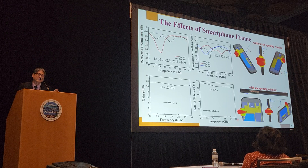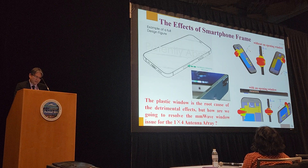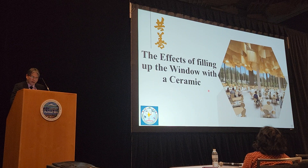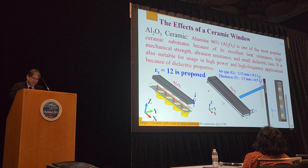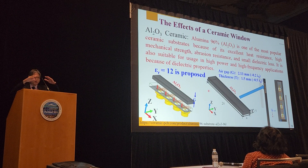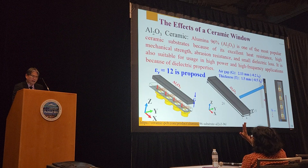Obviously, the plastic window is the root cause of this effect. But how are we going to resolve this window issue for our 1x4 array? We next look at a type of material known as aluminum oxide — 96%, called AL2O3. We choose this material because it is one of the most popular ceramic substrates with excellent heat resistance and high mechanical strength. The ceramic dimensions are: length 34 mm, height 1.5 mm, and width 4 mm.